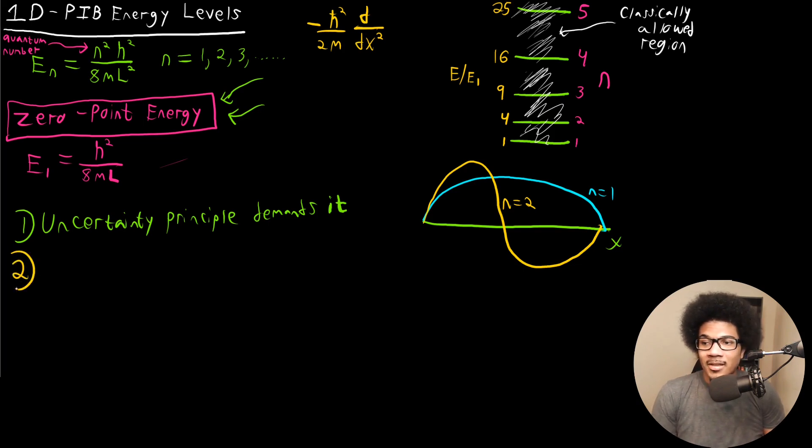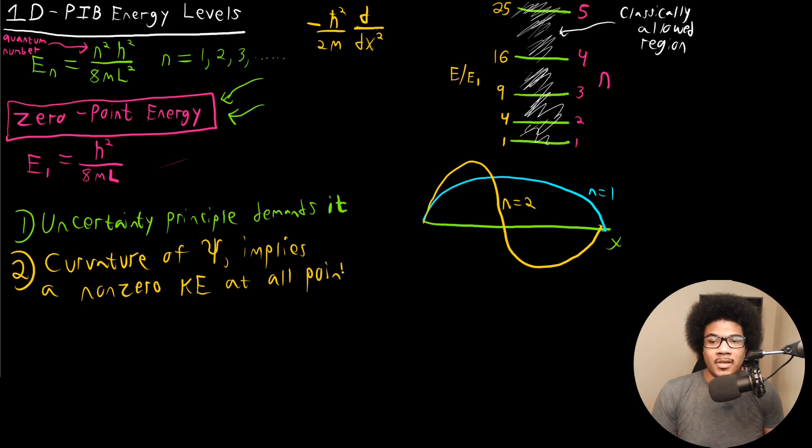So it's always going to have some kinetic energy. So basically the curvature of psi implies a non-zero kinetic energy at all points. Basically if your function has some curvature and your operator depends on the second derivative, then that operator is never going to be equal to zero because there's always some curvature in that function.